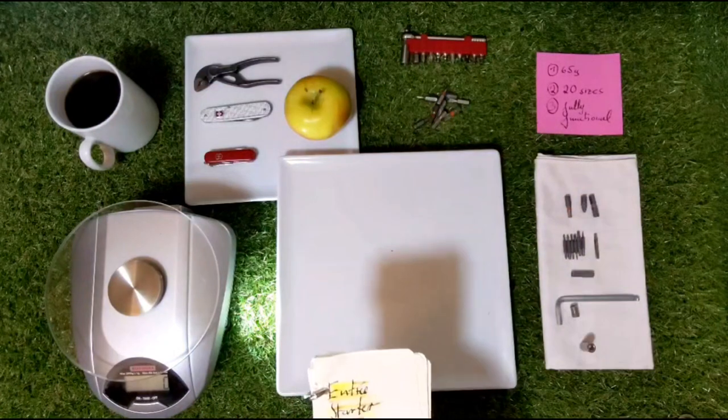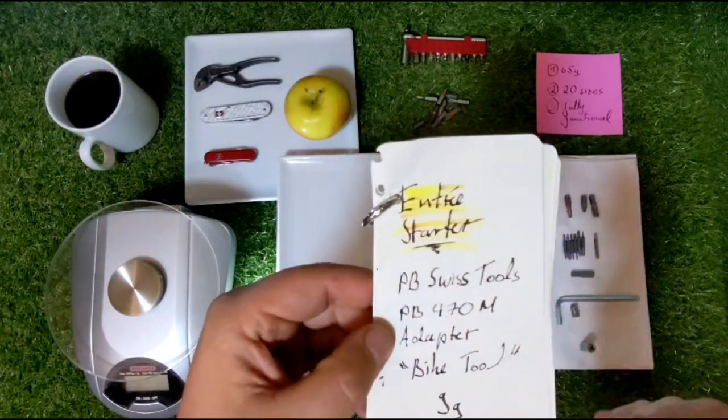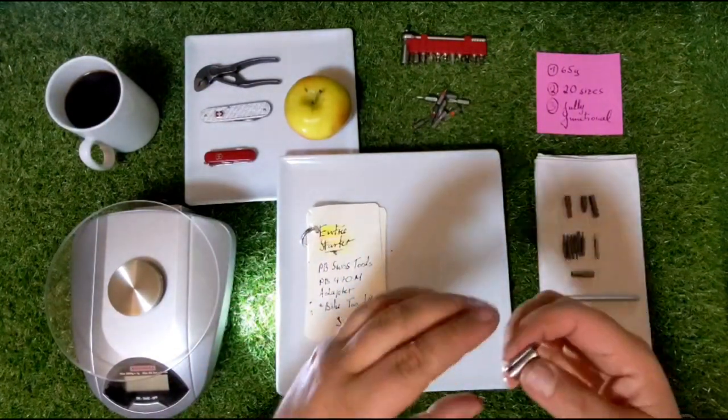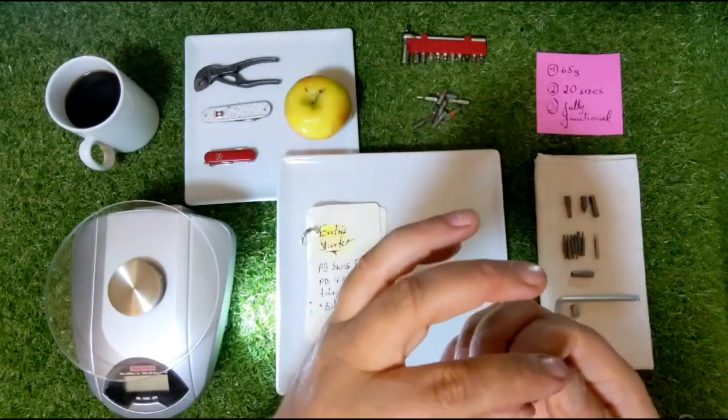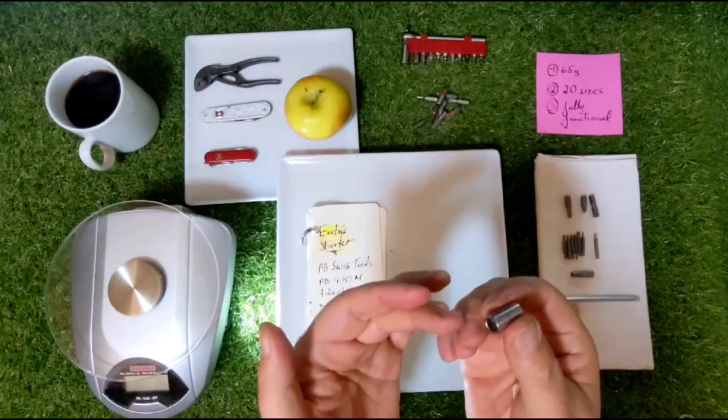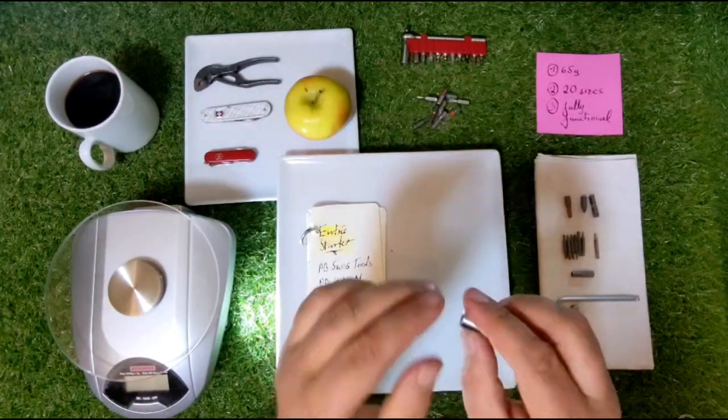As the starter we have the PB Swiss tools PB 470M adapter, which is part of the bike tool and weighs officially nine grams. This is the centerpiece of our hack. The PB Swiss tools adapter is really amazing, with powerful magnets and great tolerances. This is the hex 5 part and this is the quarter for the quarter inch bits.